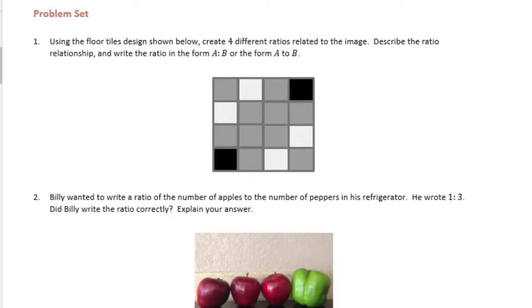Sixth grade, module one, lesson two, problem set. Number one, use the floor tiles design shown below. Create four different ratios related to the image. Describe the ratio relationship and write the ratio in the form A to B or the form A to B.